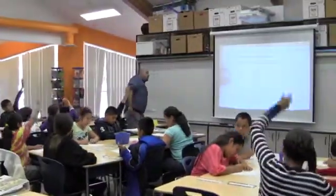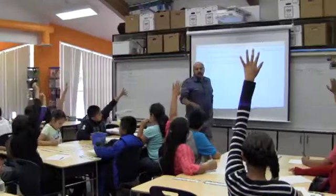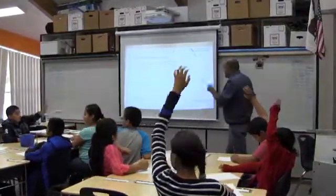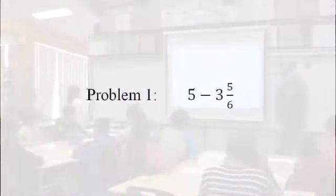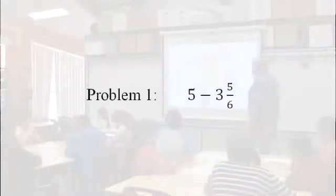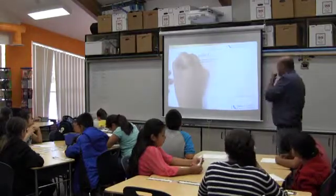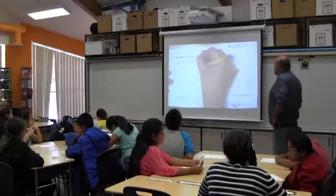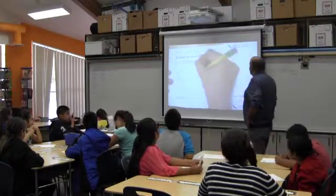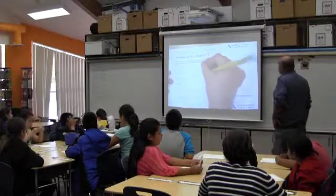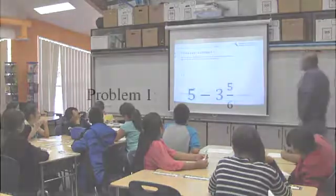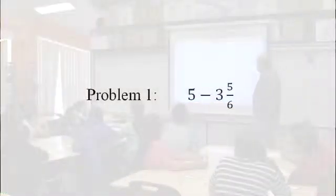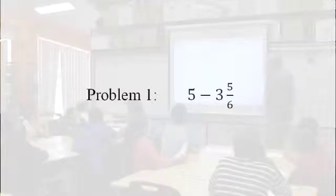Can somebody come up and do number one for me please? Marissa comes up. So check your work please as she is doing it. Marissa, can you explain to us what you did? I converted the five, and the four and six-sixths, and I subtracted four six-sixths minus three five-sixths.